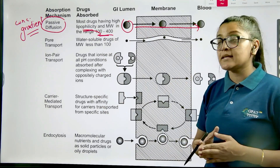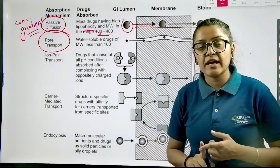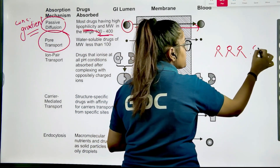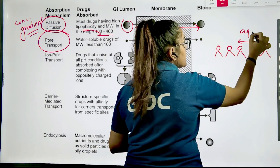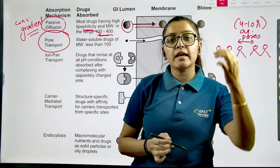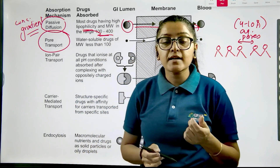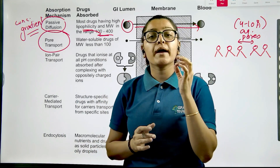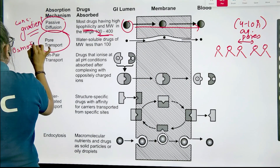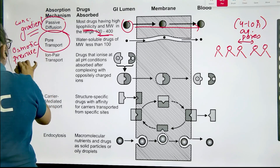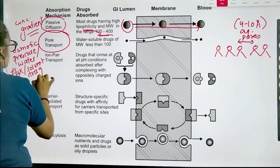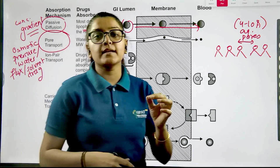The second mechanism is pore transport. From the diagram of the cell membrane seen previously, there are aqueous pores between the lipid structures. The size of these aqueous pores — very important — is 4 to 10 angstroms. Through these tiny pores, drugs are transported across the cell membrane via water flux, also called solvent drag. The driving force here is osmotic pressure or water flux/solvent drag. The drug must have a size less than 100 to pass through these aqueous pores.